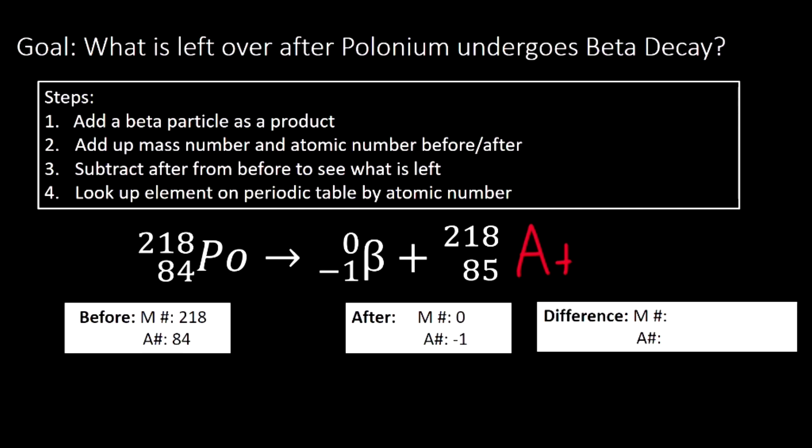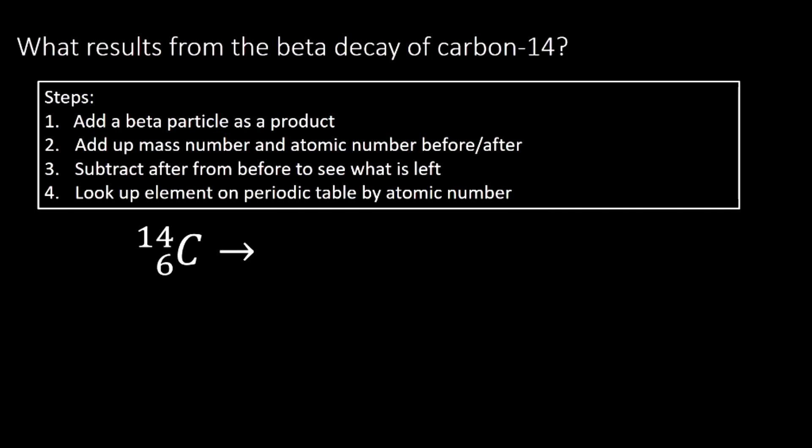Let's do one more practice. Here we have the isotope carbon-14 undergoing beta decay. This is actually a really important decay that we're going to get into in a future video, because carbon-14, you might have heard of before, it's used for dating things, that is telling how old they are. The reason it can be used is because over time, carbon-14 decays. So how much carbon-14 remains is a good indicator of how long that carbon material has been around.